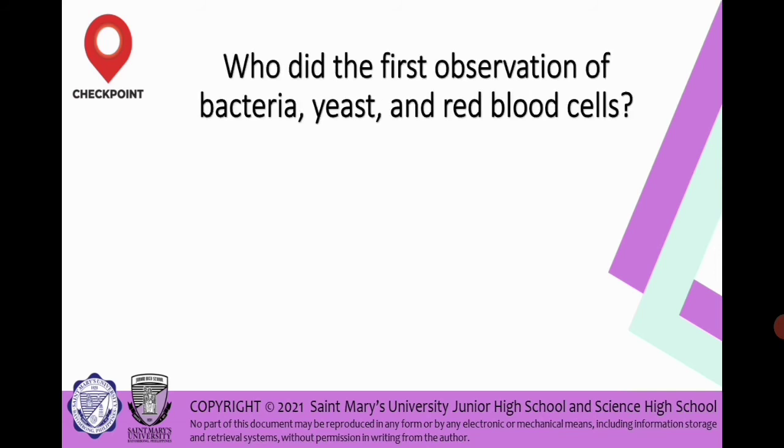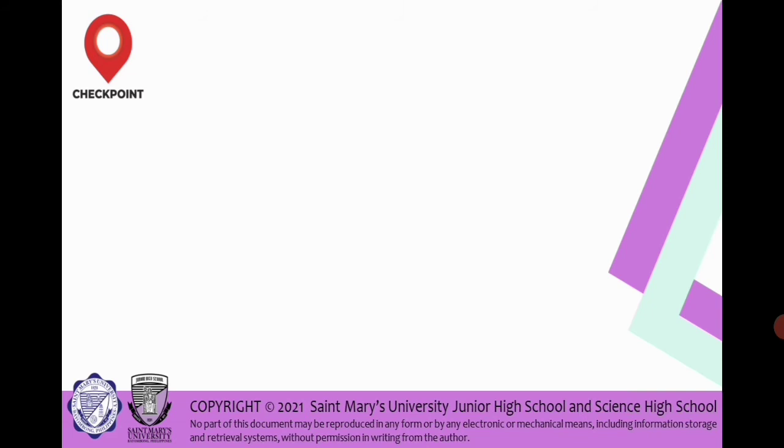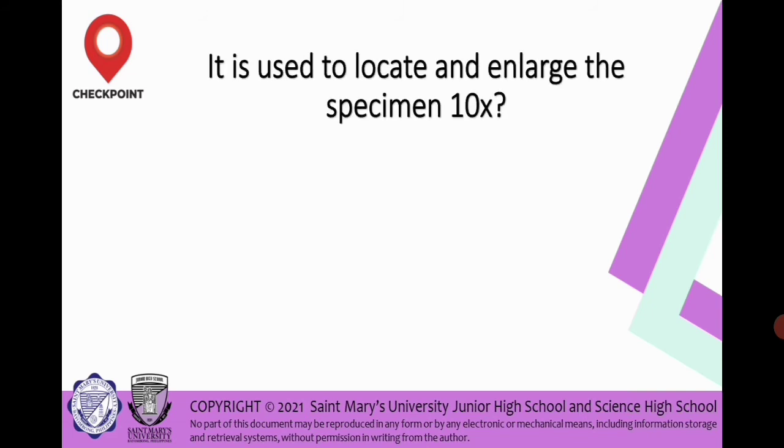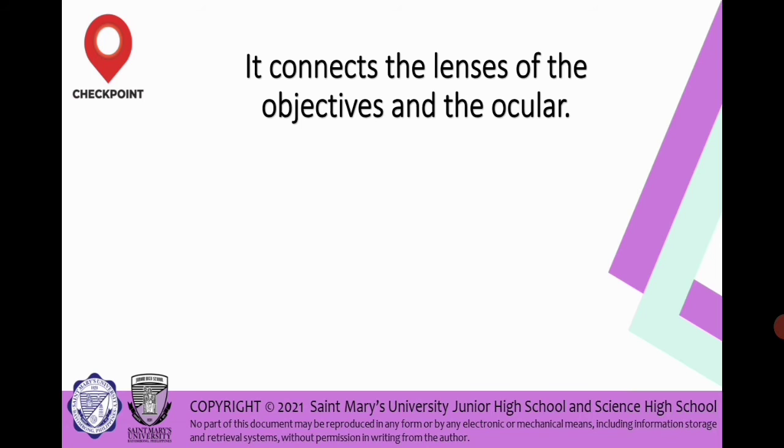Let's have a checkpoint or some trivia or analysis based on the discussed topic on microscopy. Who did the first observation of bacteria and red blood cells? The answer is Anton van Leeuwenhoek. Next, you need to recall what do we call the parts of the microscope that are used to provide light? The answer is illuminating parts. Another checkpoint: it is used to locate and enlarge the specimen 10 times. The answer is the LPO or low power objective. Next checkpoint: it connects the lenses of the objects and the ocular. We have barrel or body tube. Next, it supports the entire weight of the microscope. And I guess the answer is base. Very good.